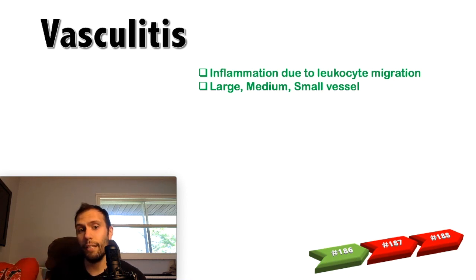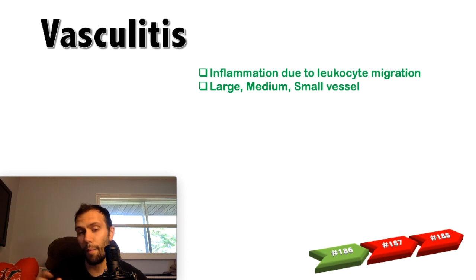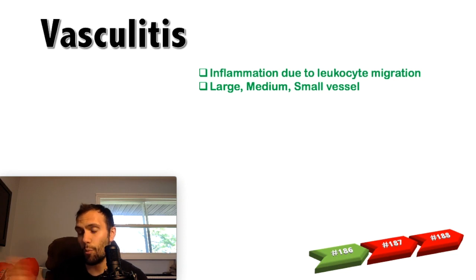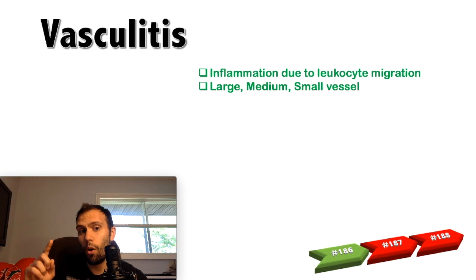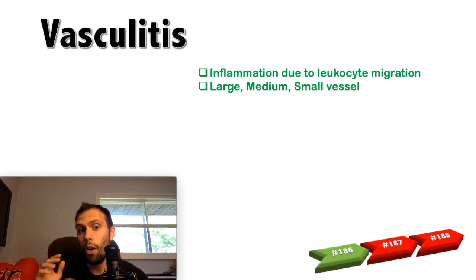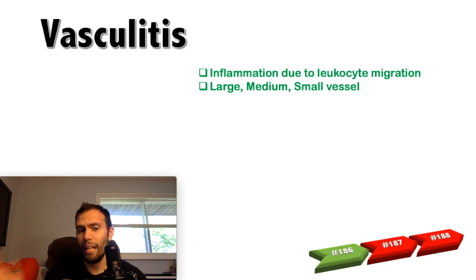Vasculitis can be classified in a number of ways — based on location or cause — but the way we want to organize them, consistent with First Aid, is by the caliber or type of vessel: small, medium, and large vessel vasculitis. In this video, we'll focus on the medium vessel, and in future videos we'll talk about the others.